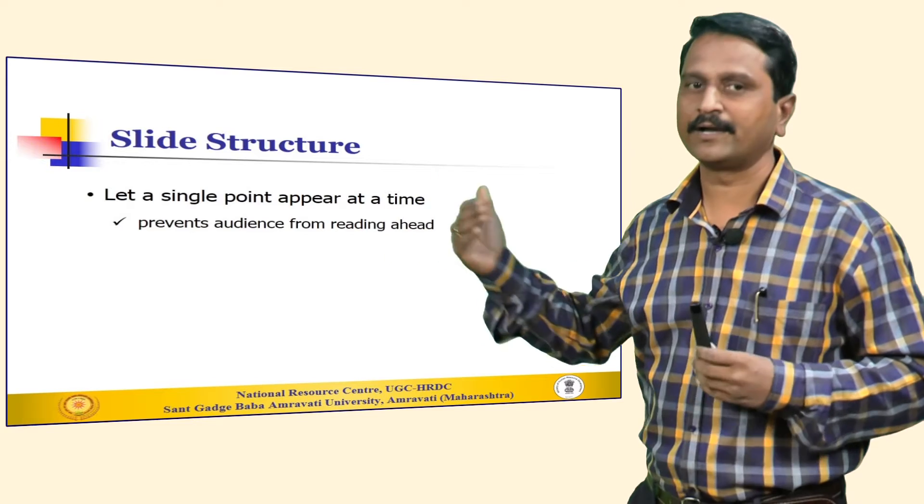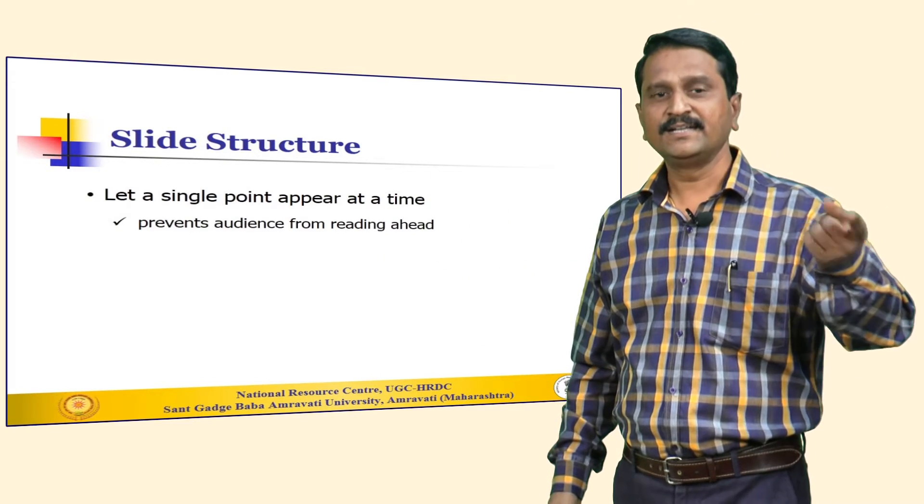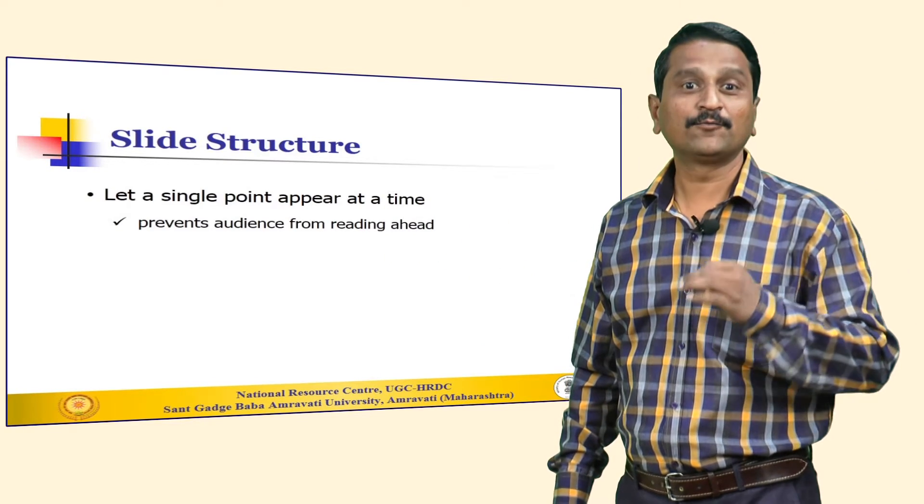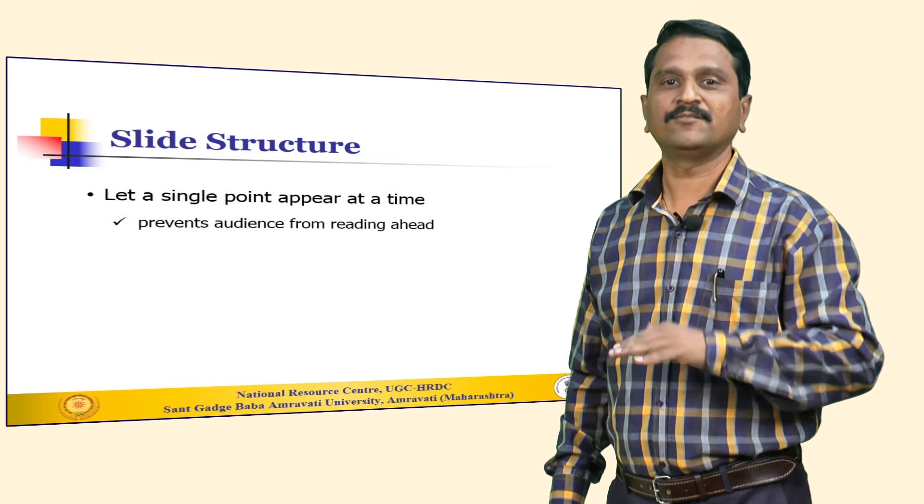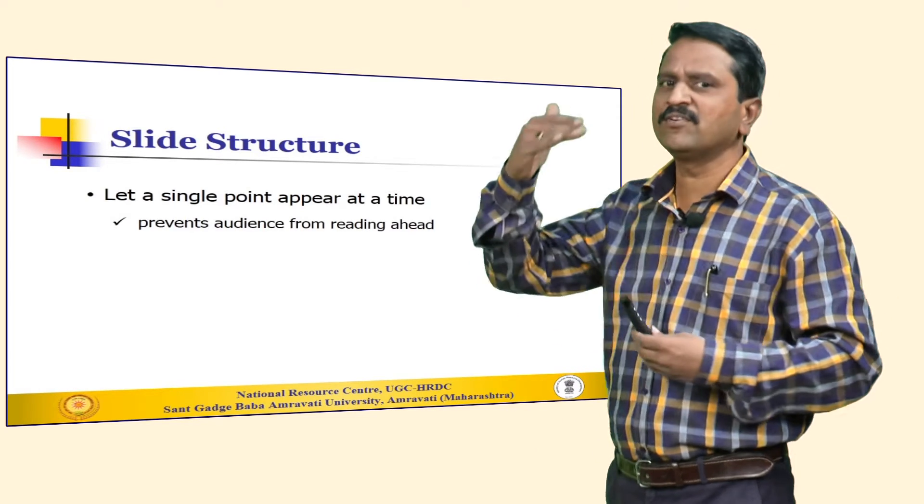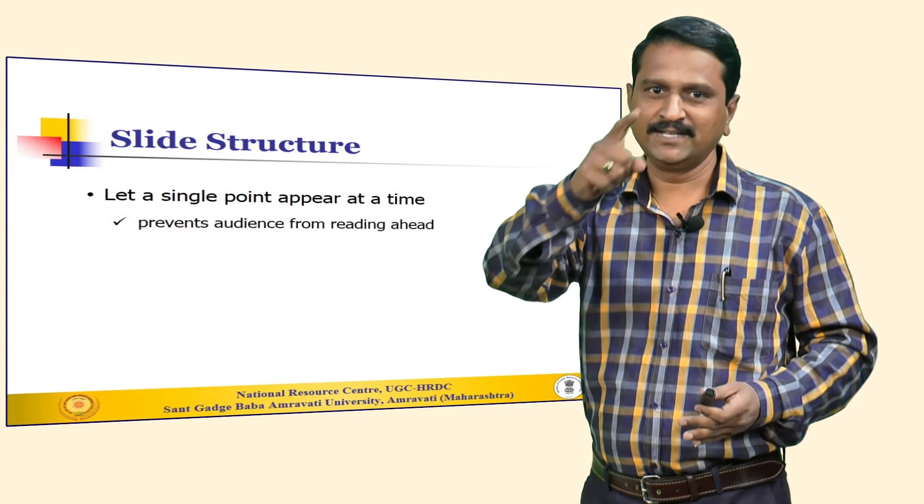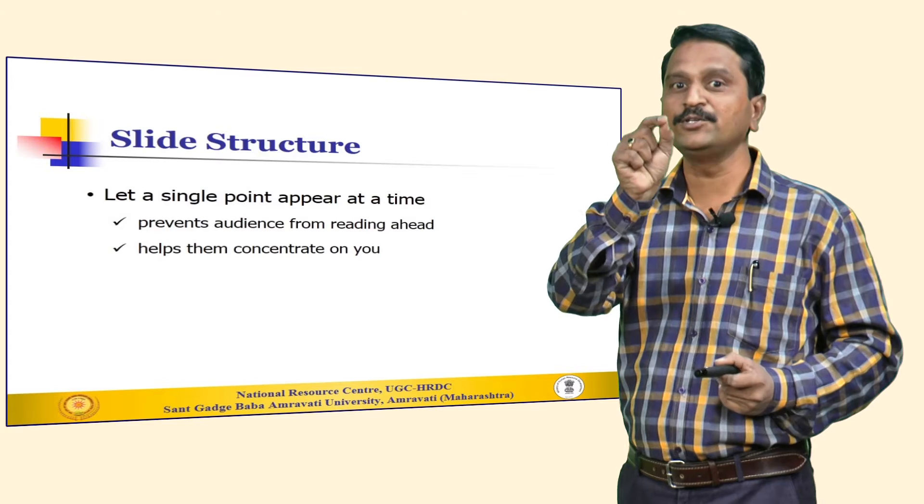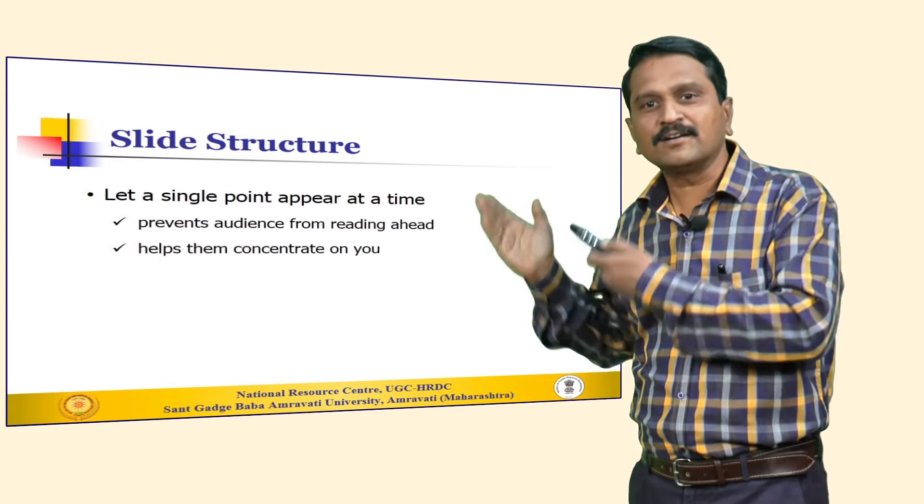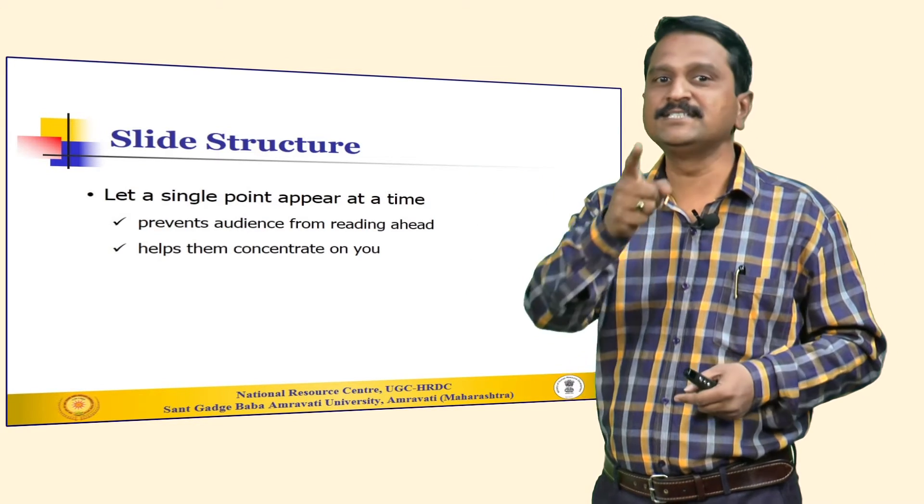Now, as we have mentioned that the slide should not say everything and should be presented in the form of points, we will see how the points have to be displayed. Let a single point appear at a time. What is the advantage of this? It prevents the audience from reading ahead. Otherwise, when I am explaining the first point, probably the audience may be busy reading the fourth point. It also helps the audience to concentrate on you since only the current point which I am going to explain is displayed on the screen.